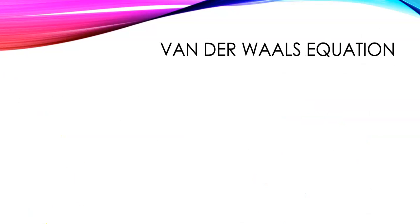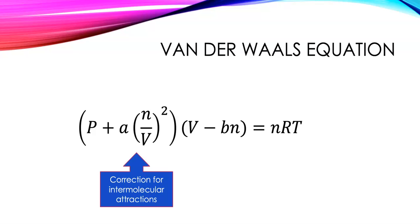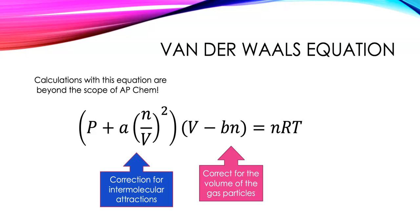This leads us to the Van der Waals equation. Van der Waals was a Dutch physicist who studied gas behaviors and modified the ideal gas law to account for the excluded volume and the attractions between particles. There is a correction for intermolecular attractions and a correction for the volume of the particles themselves. For AP Chemistry students, the Van der Waals equation is not on the formula sheet and you are not expected to do calculations with it — understanding it conceptually is what's required.